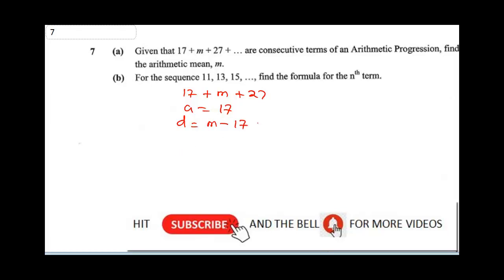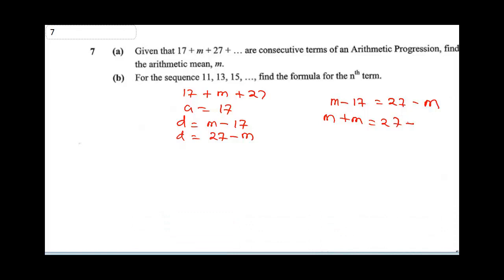And also, our common difference can also be 27 minus m. So from here, we can equate the common difference. We can now say m minus 17 is equal to 27 minus m. Let's collect like terms. This will be m plus m is equal to 27 plus 17. So this is going to be 2m is equal to 44. Our m is going to be 44 over 2, and that will give us 22.